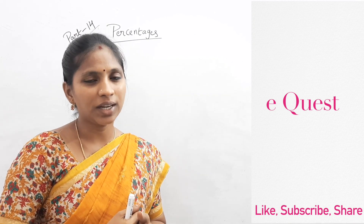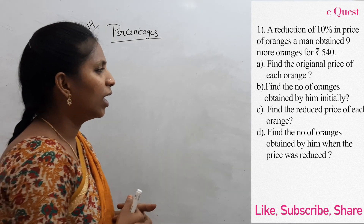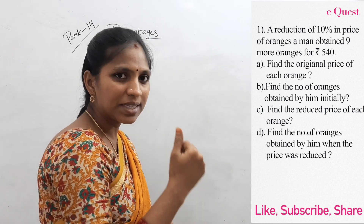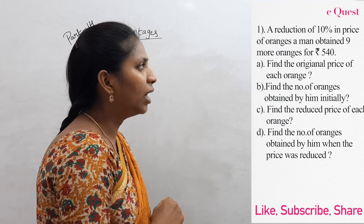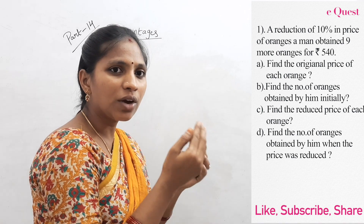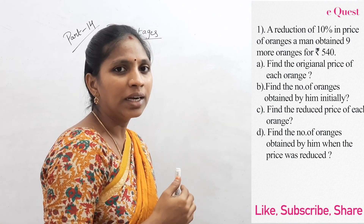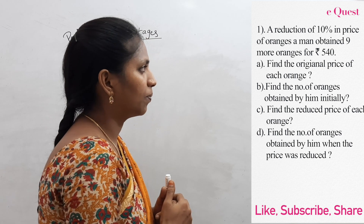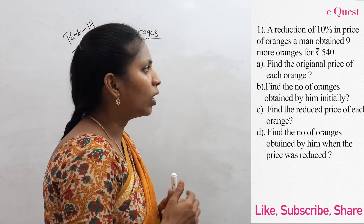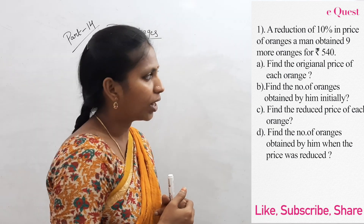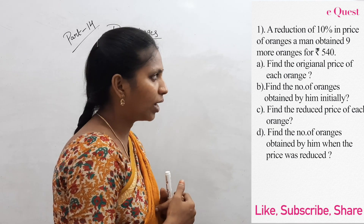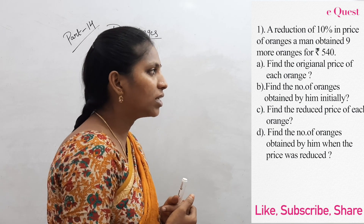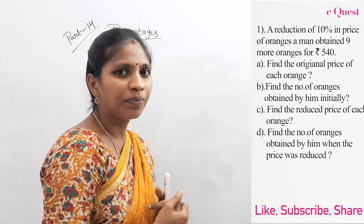Now see the first question in this concept. A reduction of 10 percentage in the price of oranges — a man obtained 9 more oranges for 540 rupees. Find the original price of each orange, the reduction price of each orange, and how many oranges were obtained by him initially and after reduction.